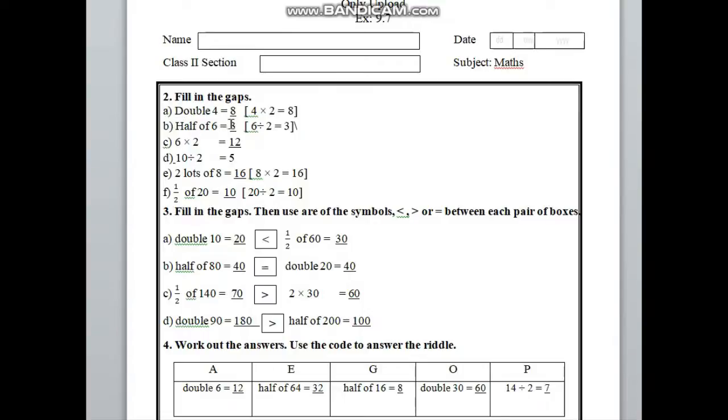First one here is double 4. How can we find the answer? To find double 4, we have to multiply by 2. Here is 4, that means we have to multiply by 2. So 4 into 2, we know 4 twos are 8.